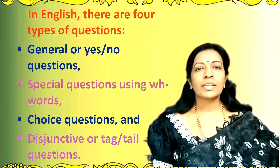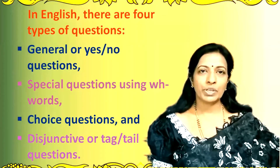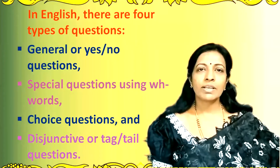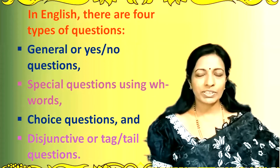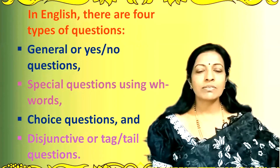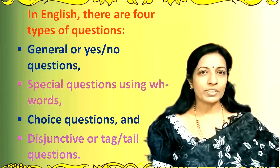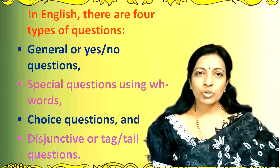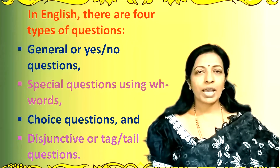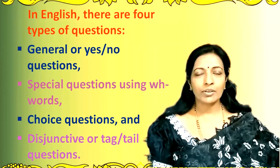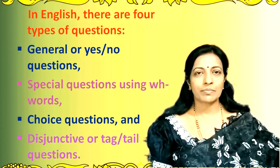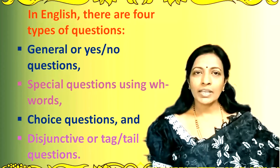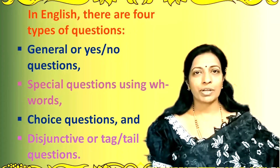Let us try to find out what are these different kinds of words which we can use in order to frame proper questions. In English, there are generally four types of questions which we use. We form general questions, which are yes or no questions. Then we have special questions, which we form using the WH words or the question words. We have choice questions, and finally we have the disjunctive or the tag questions, which are also known as tail questions.